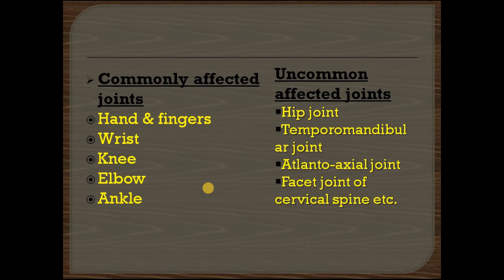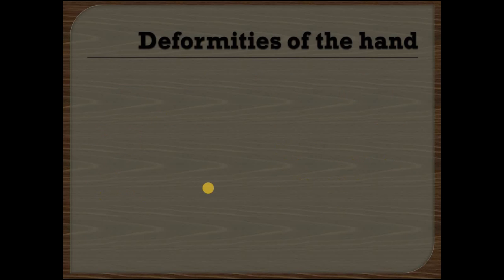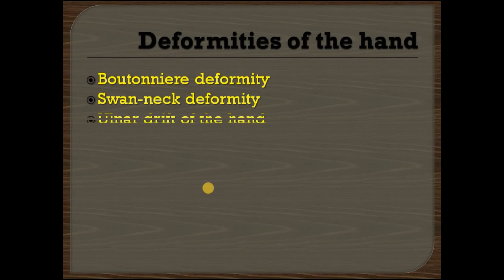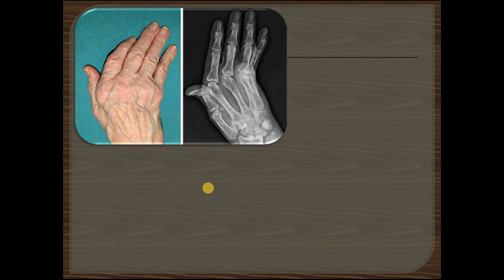In the hand there are three types of deformities commonly seen: the boutonniere deformity, swan neck deformity, and the ulnar drift of the hand. In ulnar drift of the hand there is ulnar deviation of the fingers and the hand.